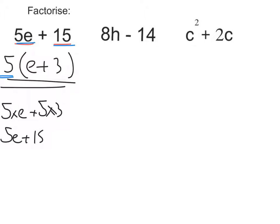Let's try the next one. 8h minus 14. So I'm looking for the largest number to divide into 8 and 14. Well, that is 2, so 2 goes outside my bracket. Then I divide each of the terms by 2. So 8h divided by 2 is going to be 4h. And negative 14 divided by 2 will be negative 7. So my answer is 2, brackets 4h minus 7.